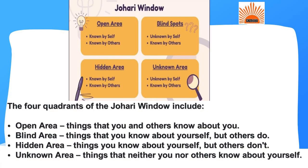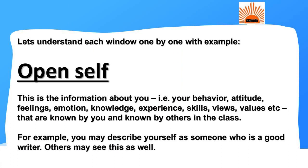The four quadrants of the Johari Window include: Open Area — things that you and others know about you; Blind Area — things that others know about you but you don't; Hidden Area — things you know about yourself but others don't; and Unknown Area — things that neither you nor others know about yourself.